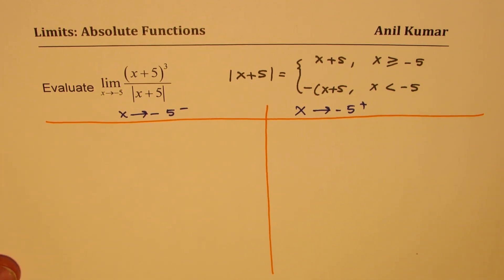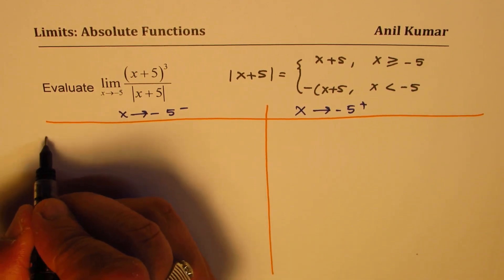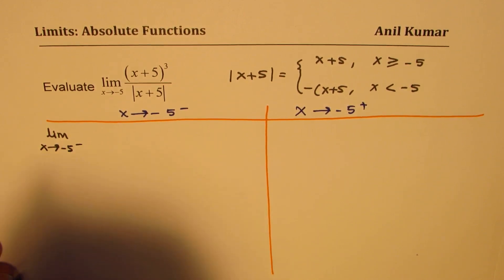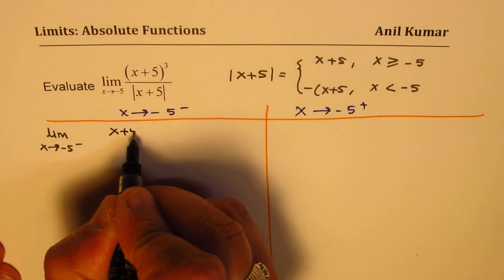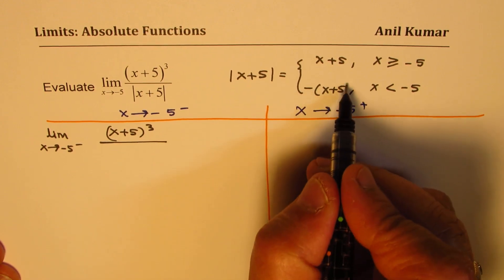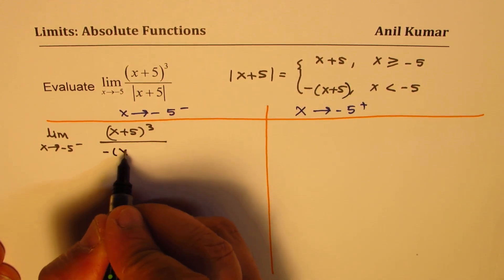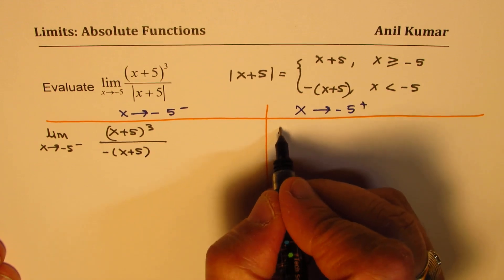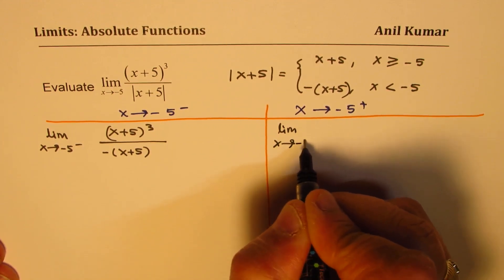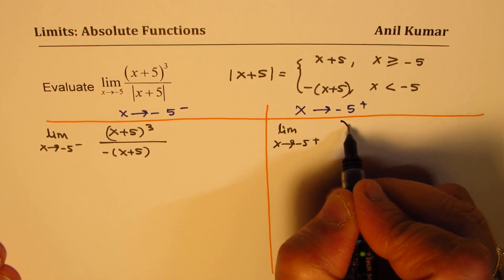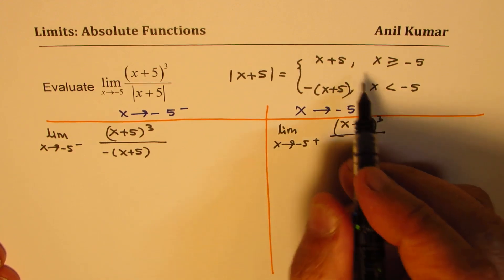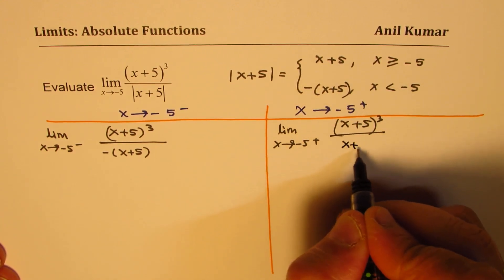On the left side: limit as x approaches minus 5 from the left, the numerator is (x+5)³ and the denominator is written as negative (x+5). On the right side: limit as x approaches minus 5 from the right, the function is (x+5)³ divided by positive (x+5).